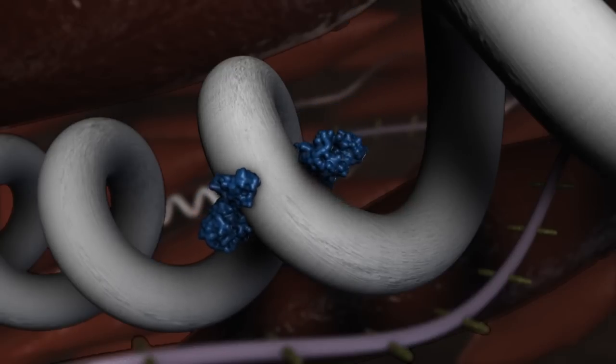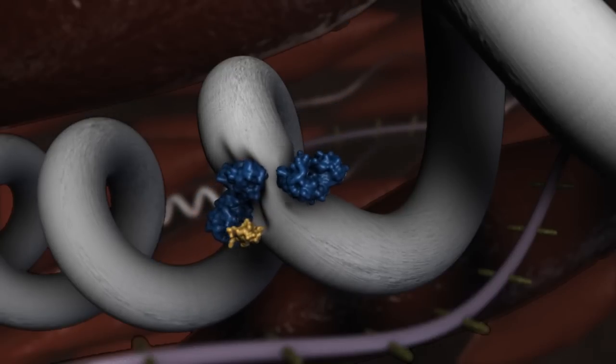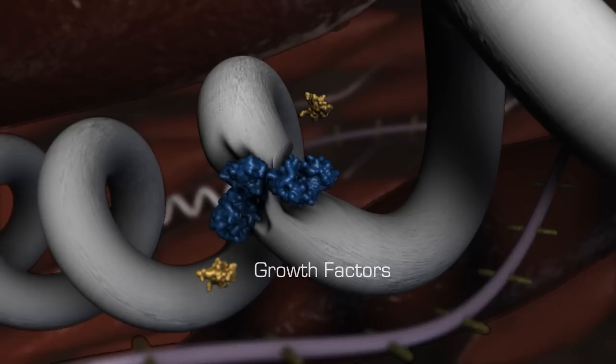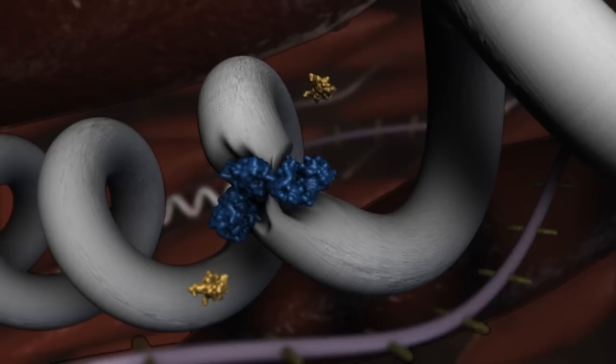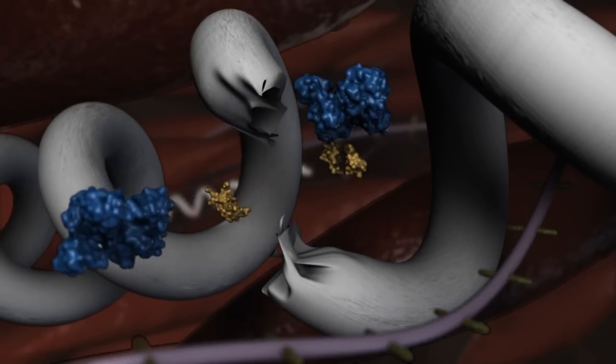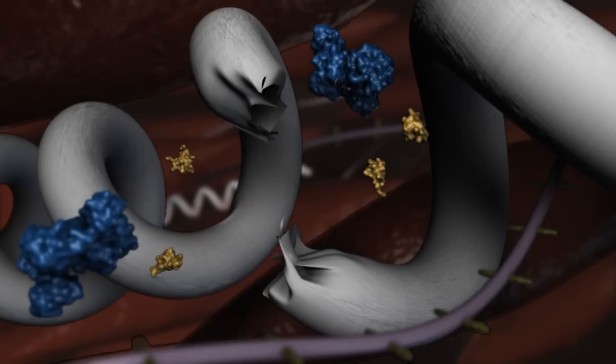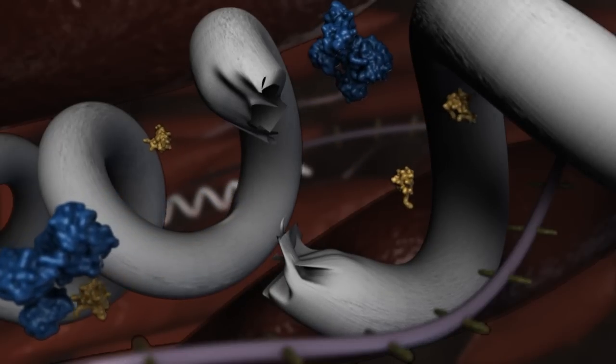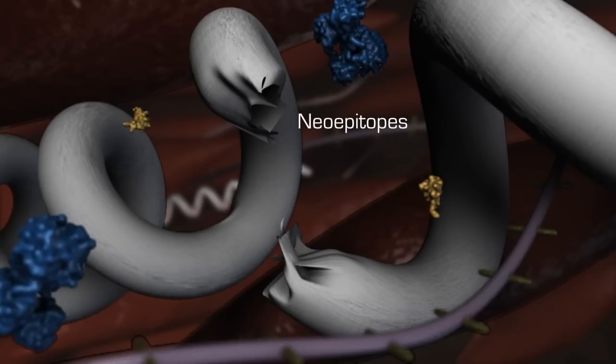These MMPs break down the structures within the ECM, releasing growth factors normally sequestered between the ECM fibers. Through this degradation, the broken fragments of ECM fibers become exposed. These fragments are called neoepitopes.